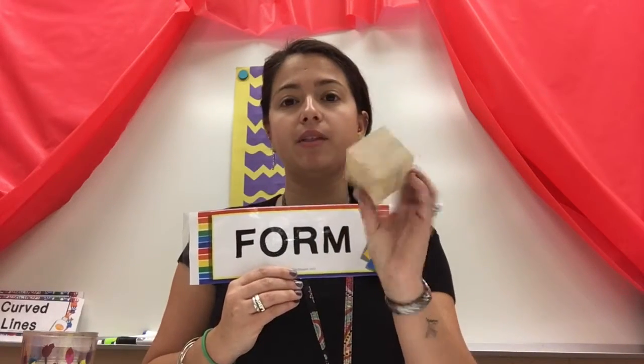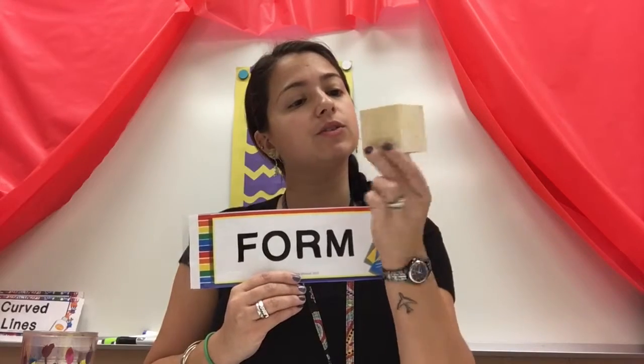For it to be a form, a form is 3D, meaning it has height, width, and depth, and you can see your way around it.